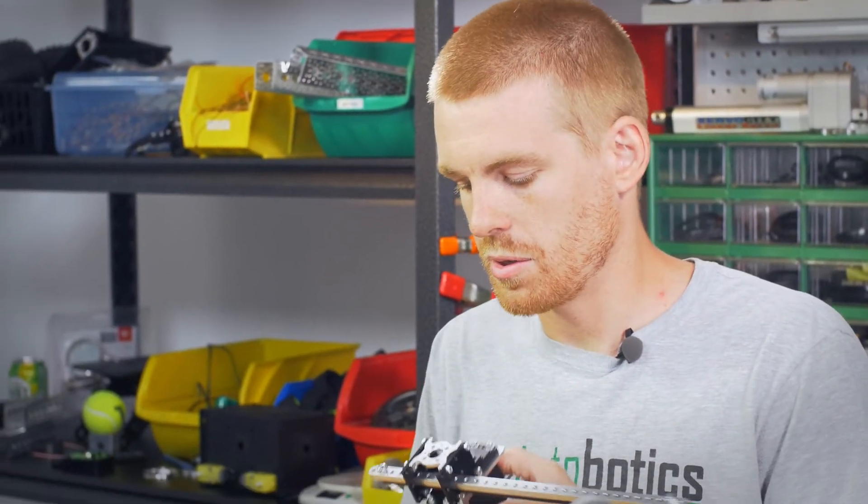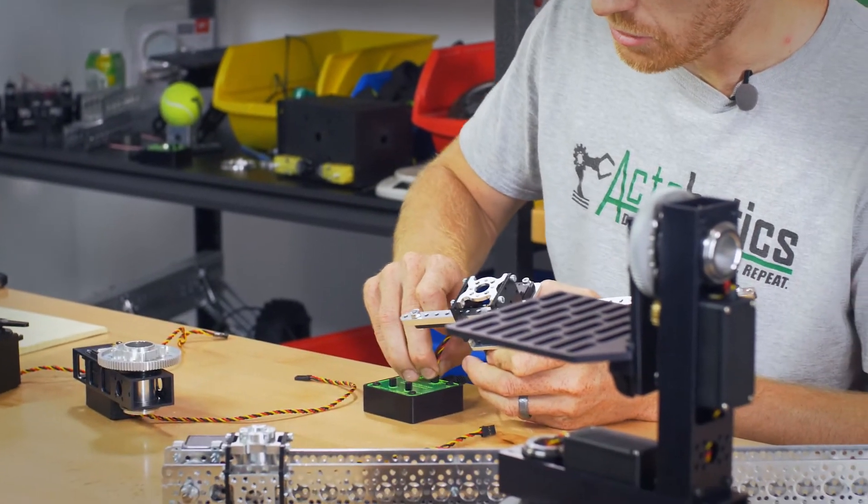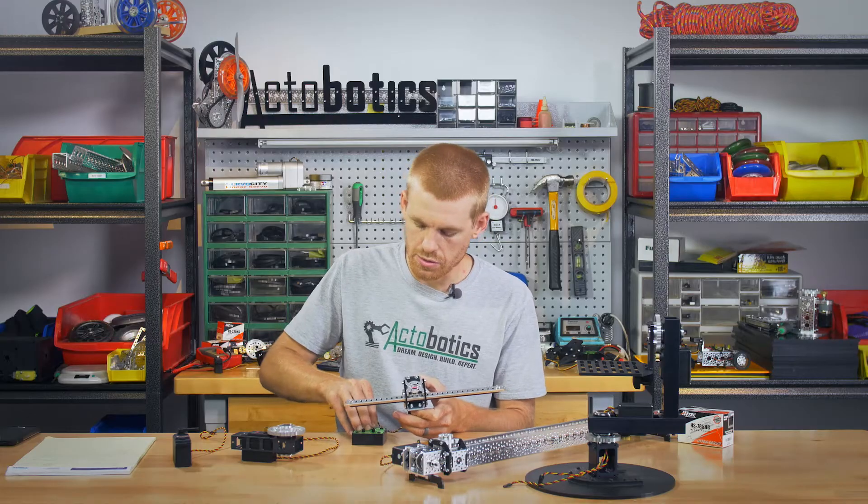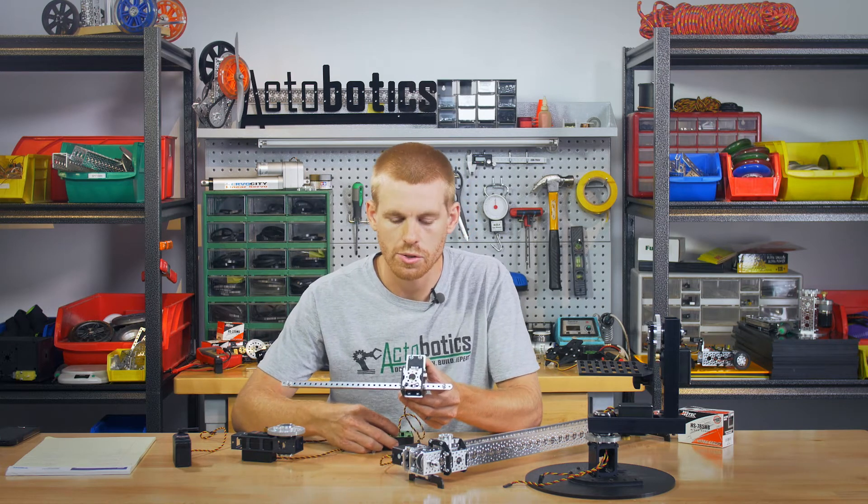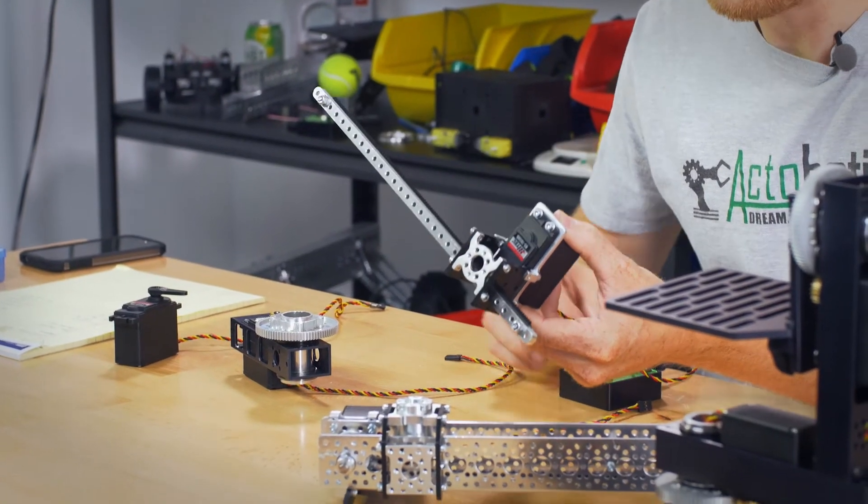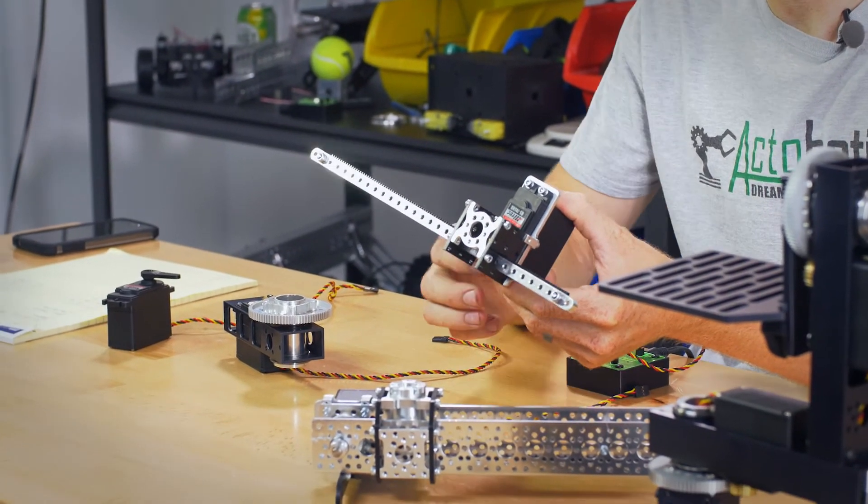Next kit that we have is going to be the 785 gear rack kit. It uses a 32-pitch gear rack, a 16-tooth 32-pitch pinion gear, and basically as the servo rotates, which once again we're using the 785HB servo, then it's going to run that gear rack back and forth.